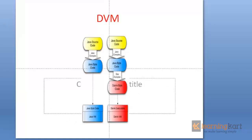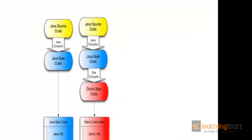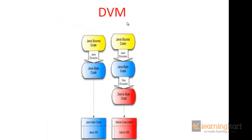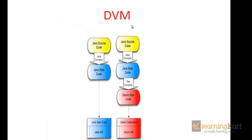Now let us see how the DVM works. The DVM, the Dalvik virtual machine, is a subset of JVM. We can see the analogy to a Java platform program: the Java source code is compiled into Java bytecode, which is then interpreted by the JVM and the output is generated.